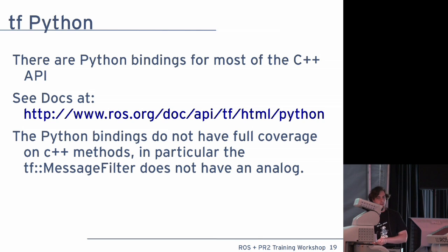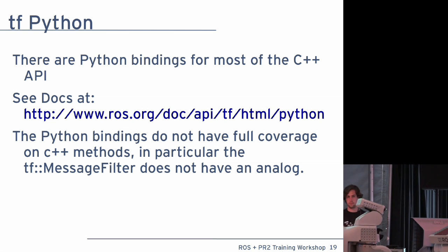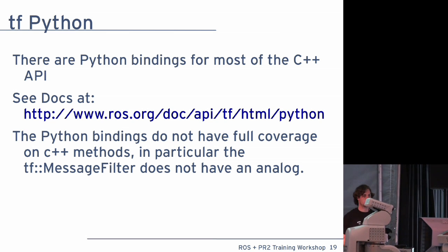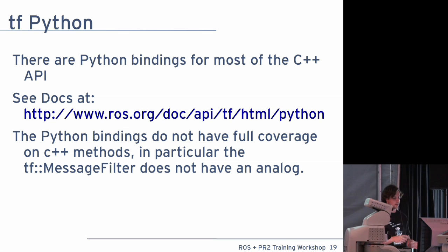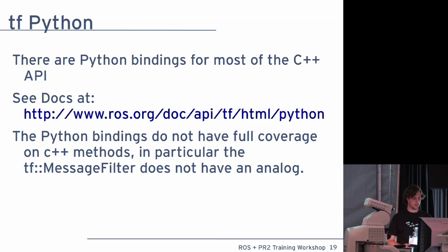There are Python bindings for almost all of the API. The one notable exception is the TF message filter, which does not have an analog. We will be adding that shortly, but it's based on the ROS message filters, which are not available in Python either.